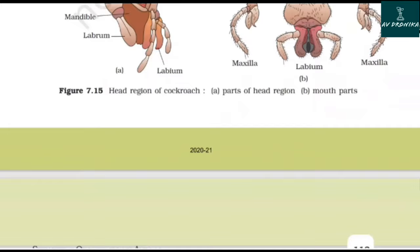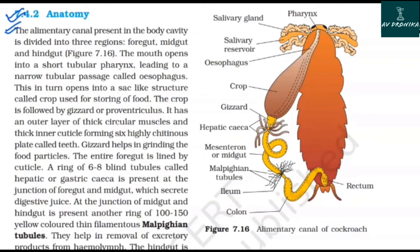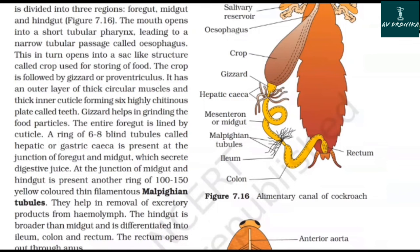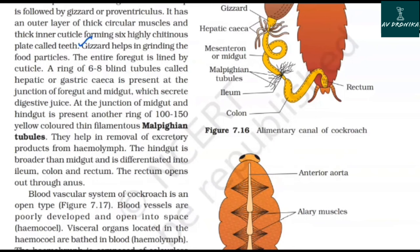7.4.2 Anatomy. The alimentary canal present in the body cavity is divided into three regions: foregut, midgut, and hindgut. The mouth opens into a short tubular pharynx leading to a narrow tubular esophagus, which opens into a sac-like crop used for storing food. The crop is followed by the gizzard or proventriculus, which has an outer layer of thick circular muscles and a thick inner cuticle forming six highly chitinous plates called teeth. The gizzard helps in grinding food particles. The entire foregut is lined by cuticle. A ring of six to eight blind tubules called hepatic or gastric caeca is present at the junction of foregut and midgut, which secrete digestive juice.